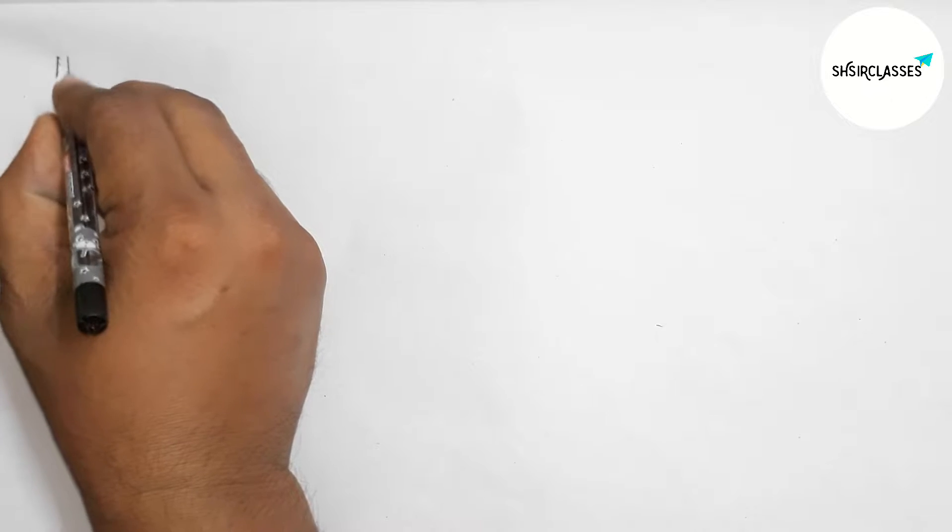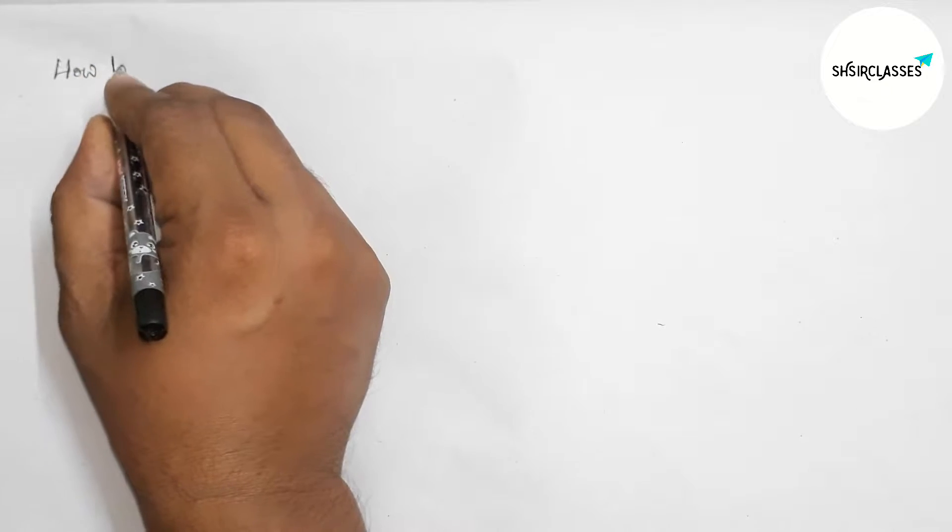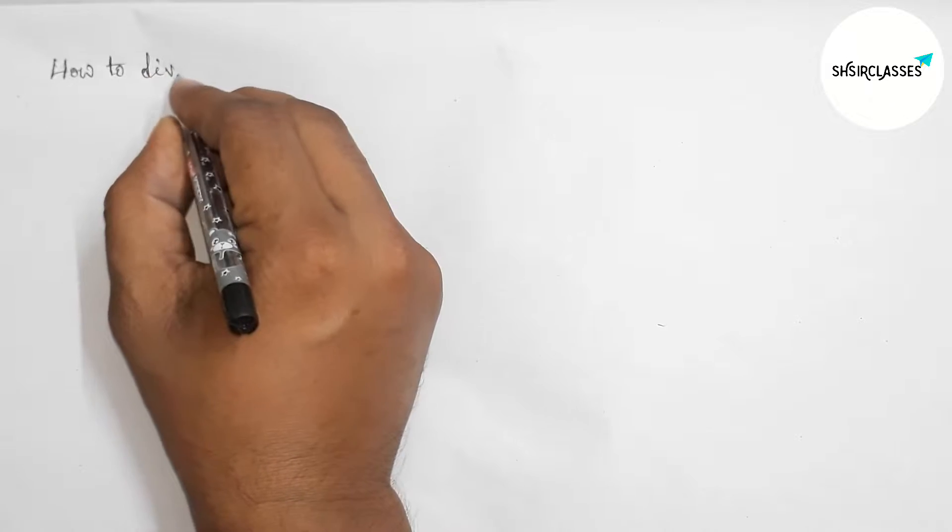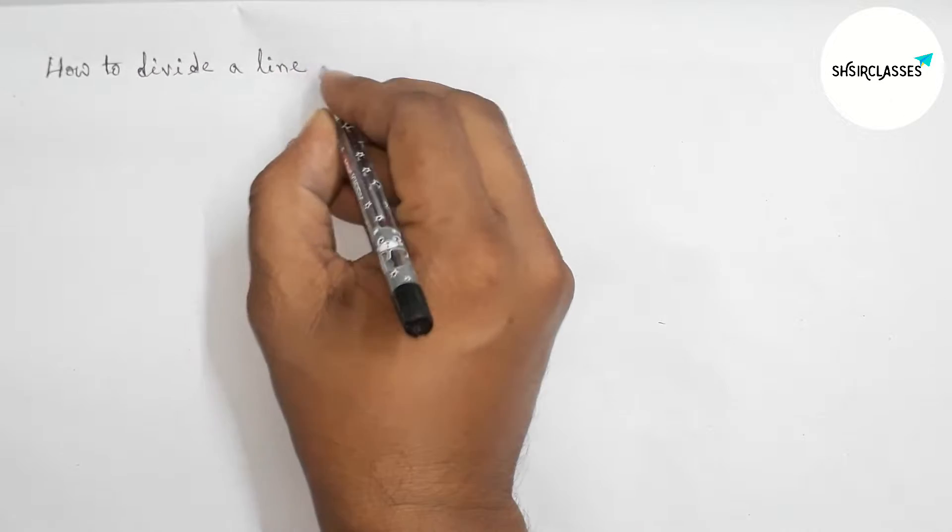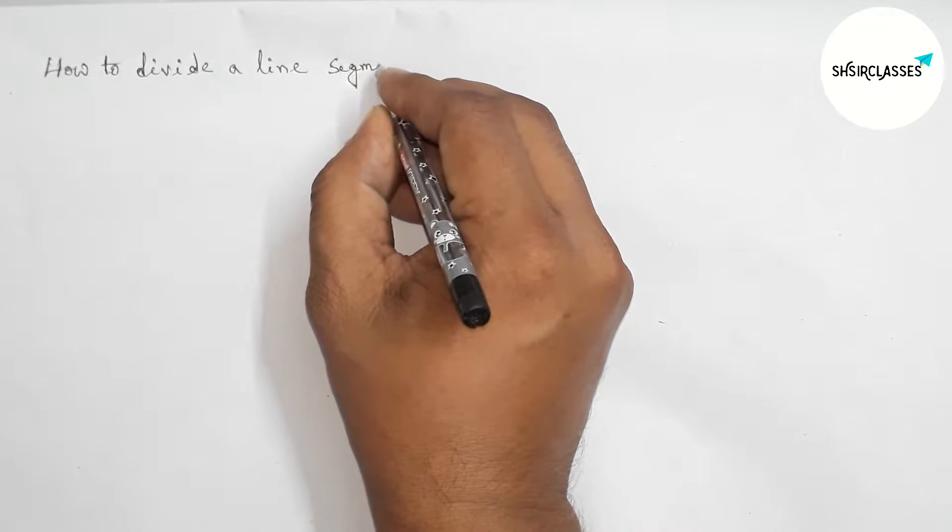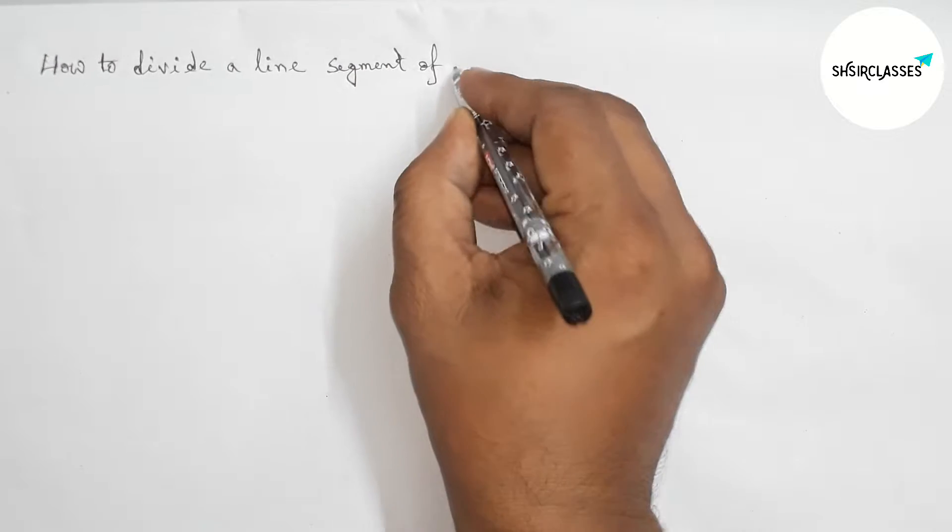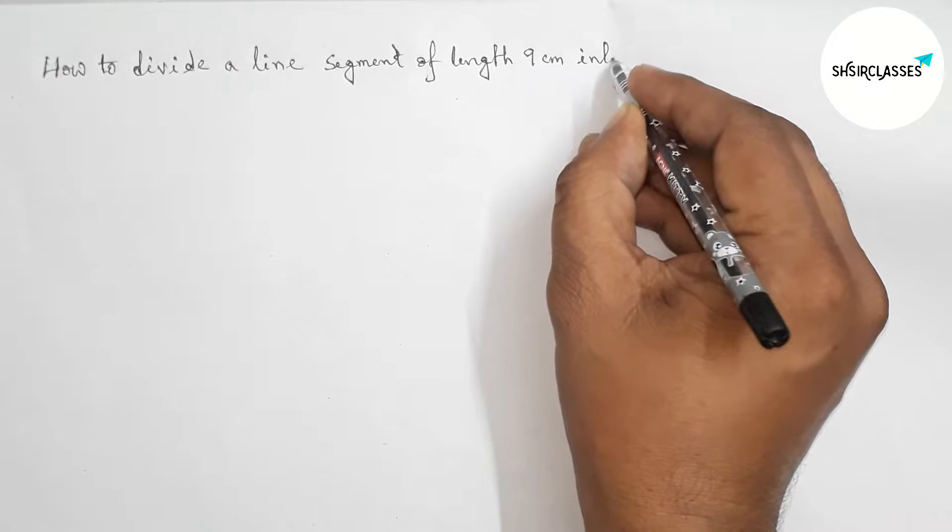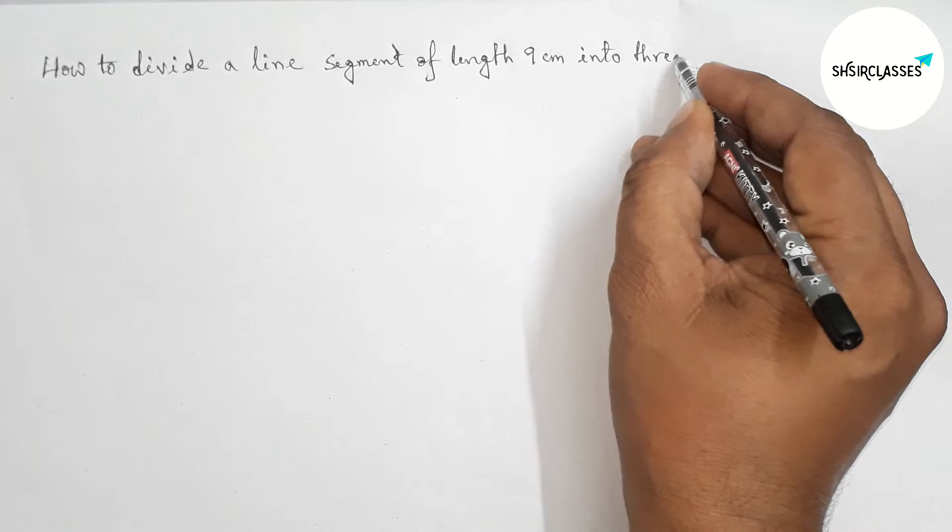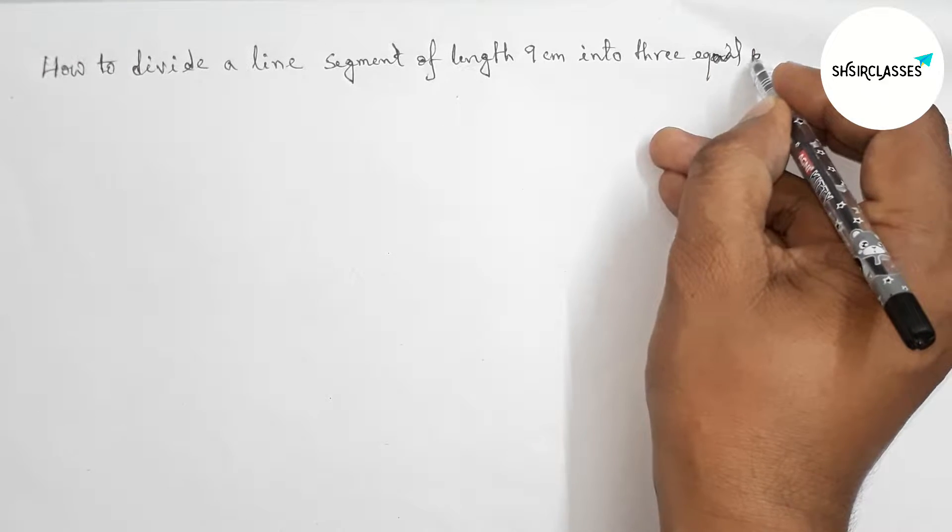Hi everyone, welcome to SI Share Classes. Today in this video, how to divide a line segment of length 9 centimeter into three equal parts in easy way. So please watch the video till the end. So let's start the video.